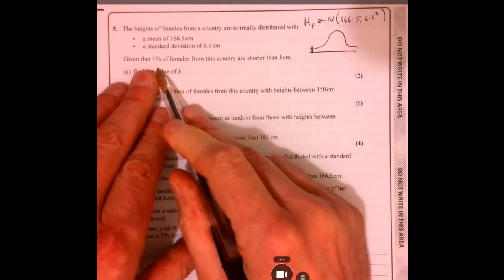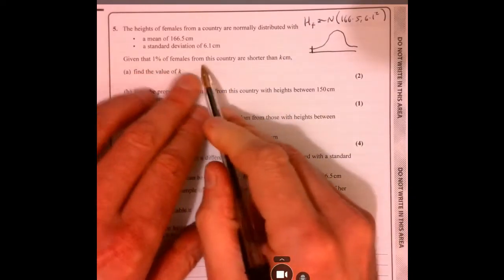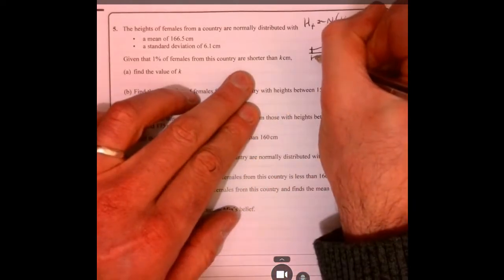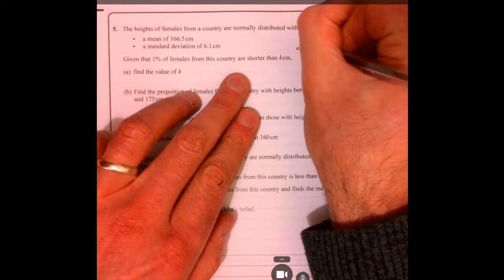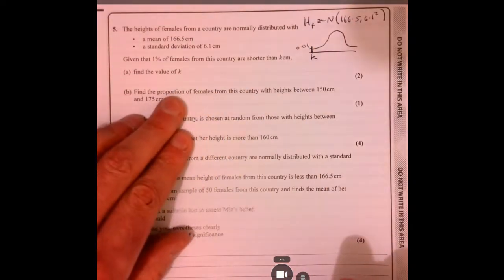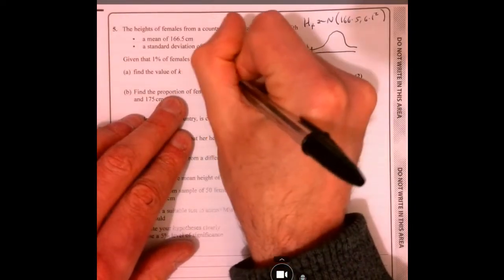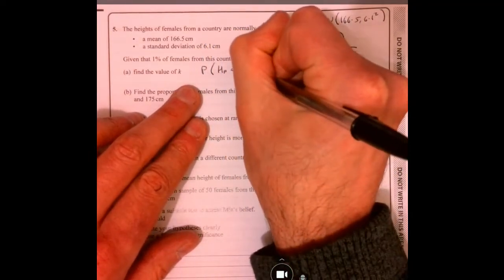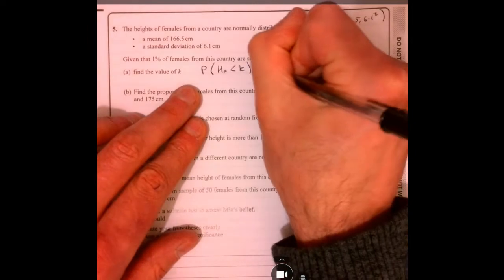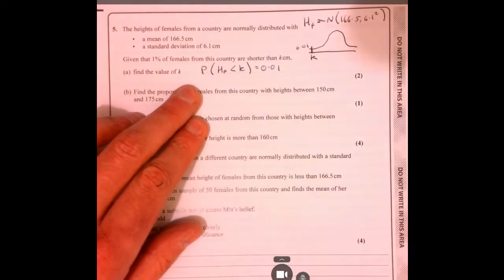What are we interested in the first bit? It tells us given that 1% of females in this country are shorter than this value. So we want that bit to be 0.01. In other words, we're looking for k equals 0.01.